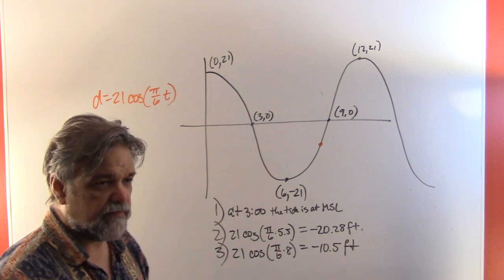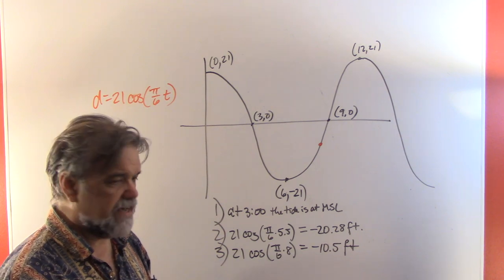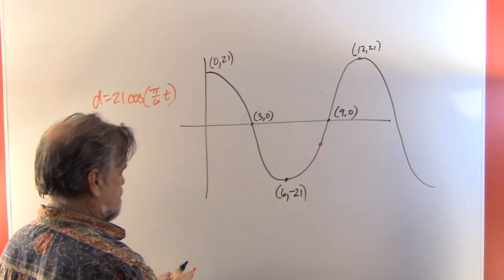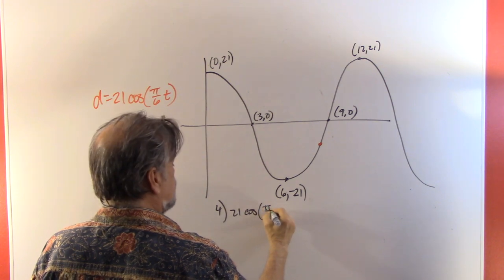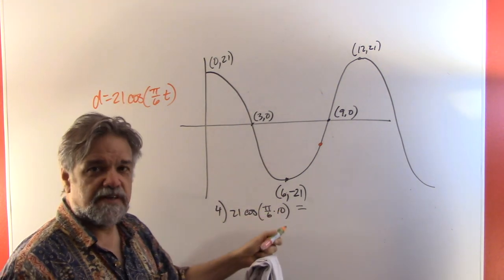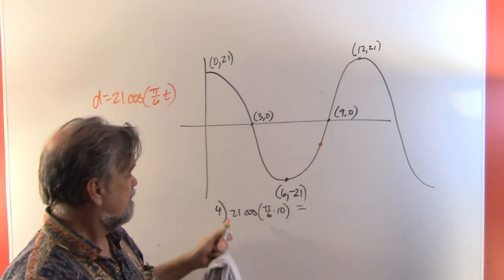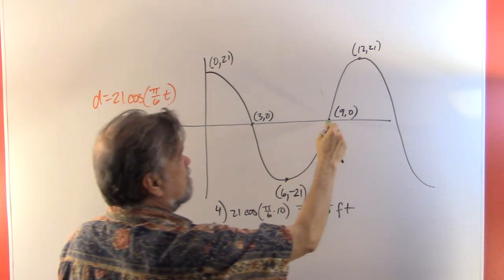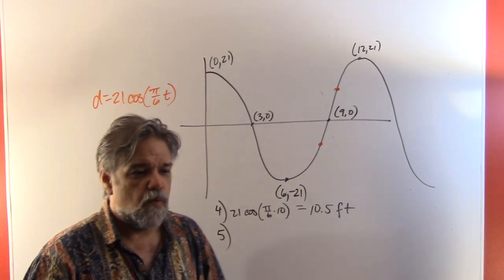For 10 p.m., t = 10: 21 × cos((π/6)(10)) = 21 × cos(10π/6) = 21 × cos(5π/3). The cosine of 5π/3 is +1/2, so 21 × (1/2) = 10.5 feet. That makes sense — at 9 o'clock the tide is at its lowest, and by 10 o'clock it's risen about halfway back up.